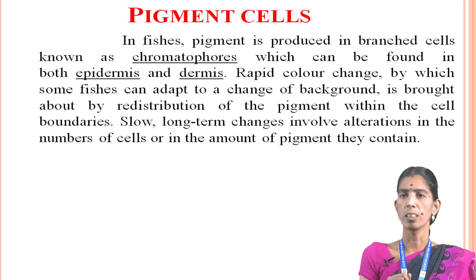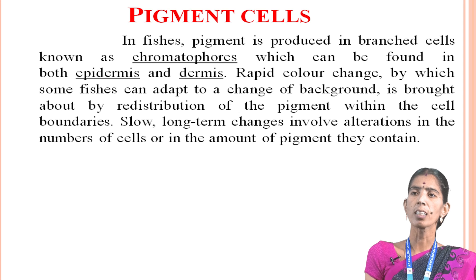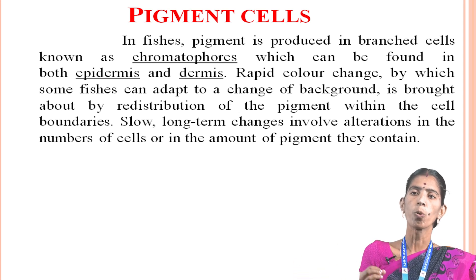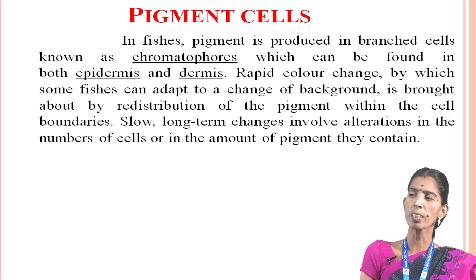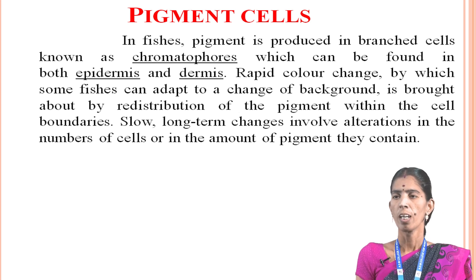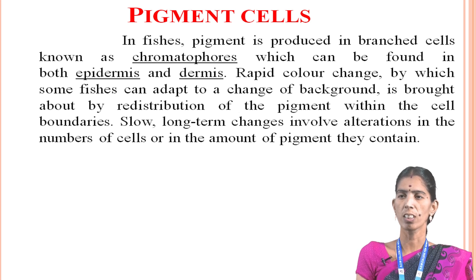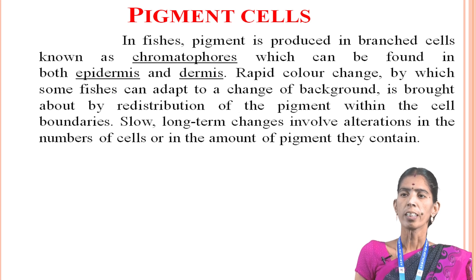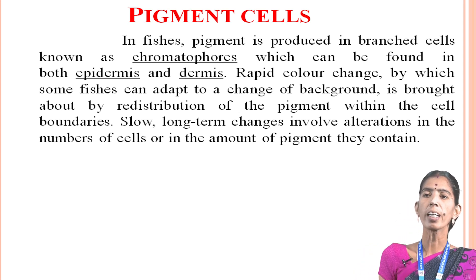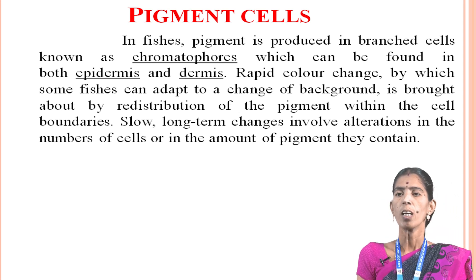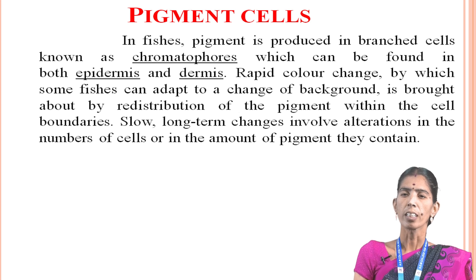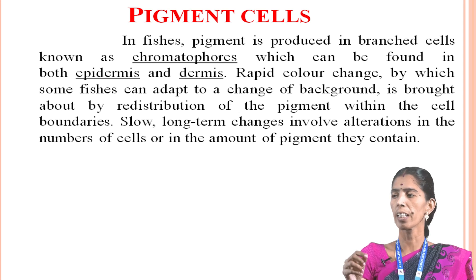Then pigment cells. In fishes, pigment is produced in branched cells known as chromatophores, which can be found in both the epidermis and dermis. Rapid color changes, by which some fishes can adapt to a change of background, are brought about by redistribution of the pigment within the cells' boundaries. Slow, long-term changes involve alterations in the number of cells or in the amount of pigment they contain.